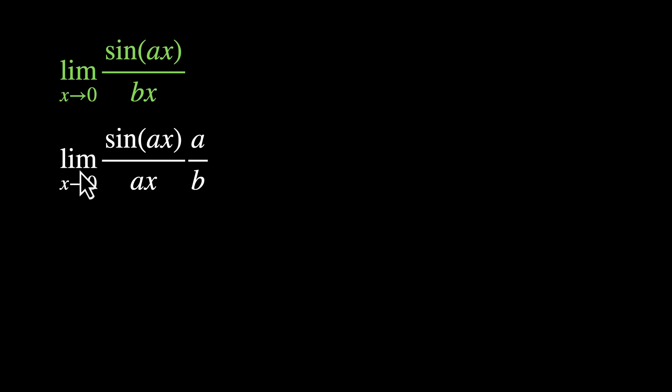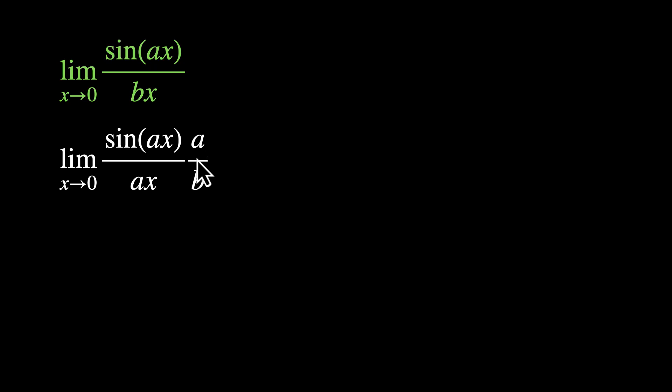Let's do this together. We want ax in the denominator. We want limit theta tends to 0, sin(theta) / theta. But we have bx. So let's switch this: we have limit x approaches 0, sin(ax) / ax. We have shifted b here. And because we have added a in the denominator, we will add a in the numerator to keep things the same. This becomes sin(ax) / ax.